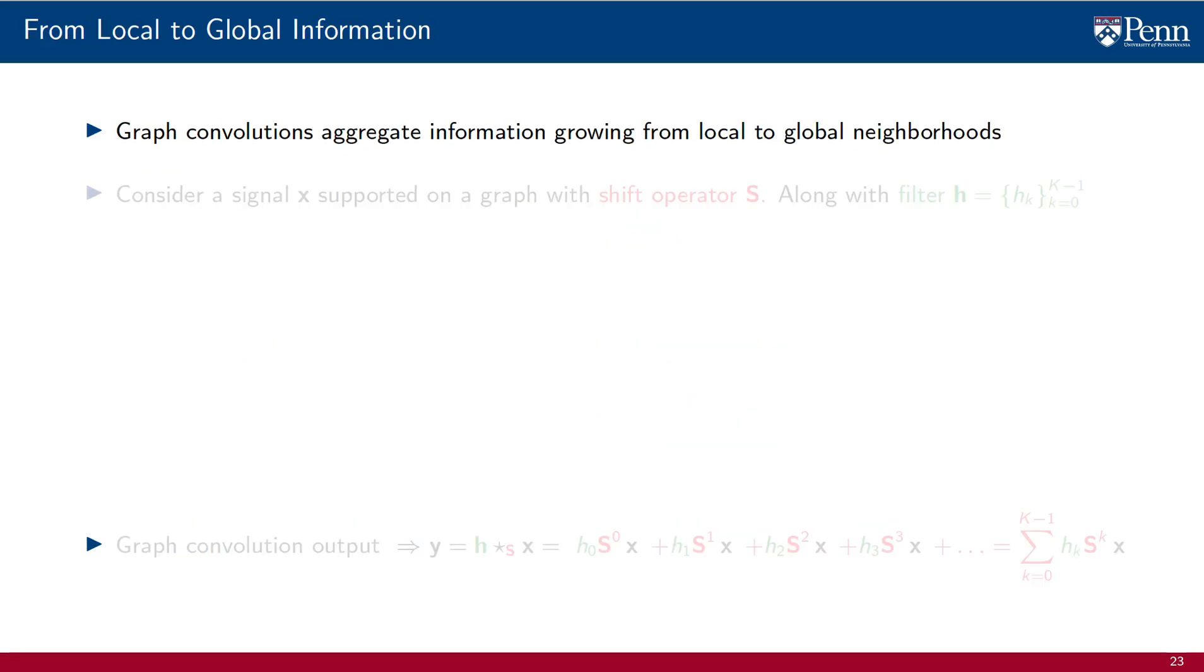Perspicacious listeners may have noticed the appearance of the diffusion sequence in the definition of graph convolutional filters. They will therefore not be surprised to see us highlighting the fact that graph convolutions aggregate information growing from local neighborhoods into global neighborhoods, which as we have said several times already, is an important property of convolutions.